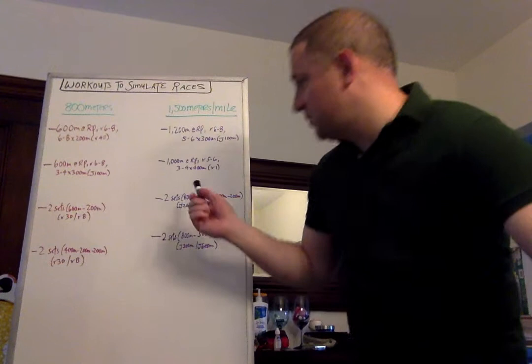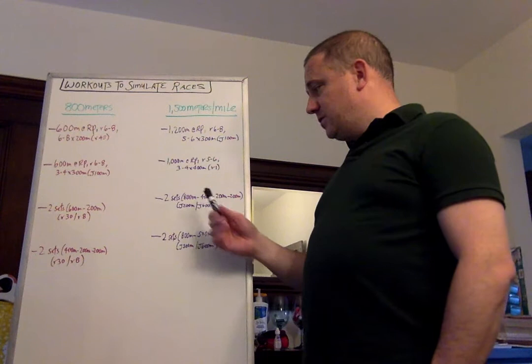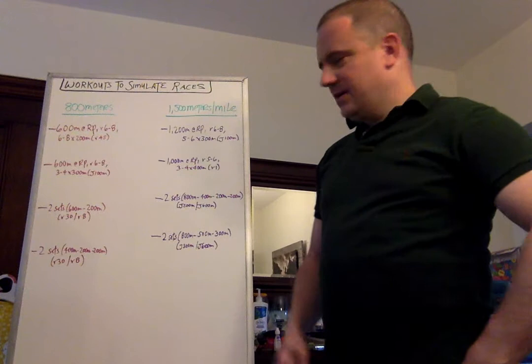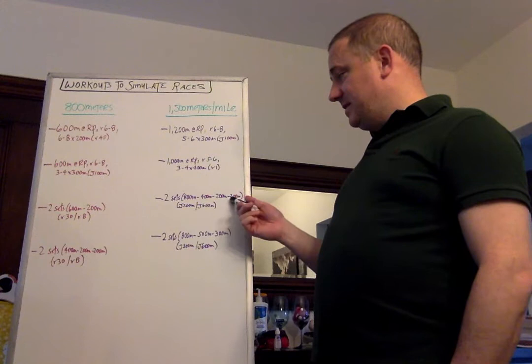Next one. Two sets of broken mile. In this case, it's 800, 400, 200, 200. The 800-meter effort's at goal mile pace. The 400-meter effort's at goal mile pace. The 200-meter effort on the back end is slightly faster than goal mile pace. So if it's five minutes, this is 2:30, that's 75, maybe running these 35, 36. If this is a 4:20 mile, that's 2:10, 65, and you're looking at maybe 30, 31 for these 200s, something like that.